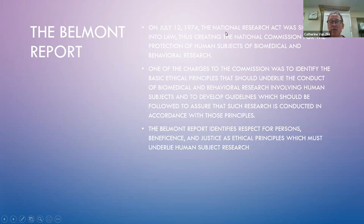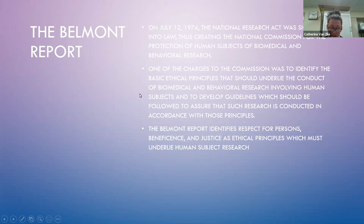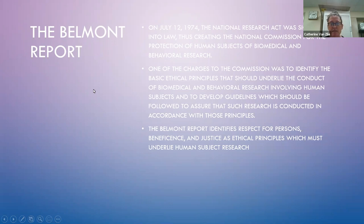The Belmont Report: on July 12, 1974, the National Research Act was signed into law, creating the National Commission for the Protection of Human Subjects of Biomedical and Behavioral Research. Its charge was to identify basic ethical principles and develop guidelines for conducting research with human subjects. The Belmont Report identifies respect for persons, beneficence, and justice as the ethical principles which must underlie human subject research. This is how all research is run today — we are here for the patients, not just for the science.